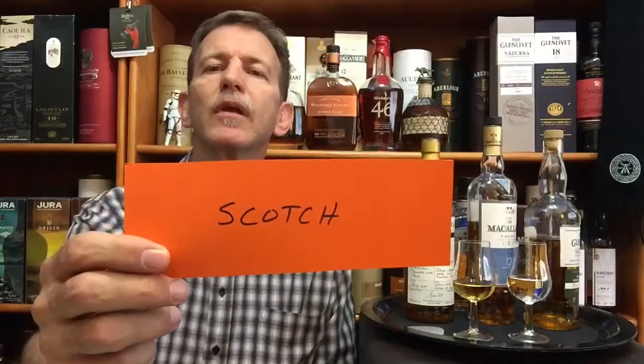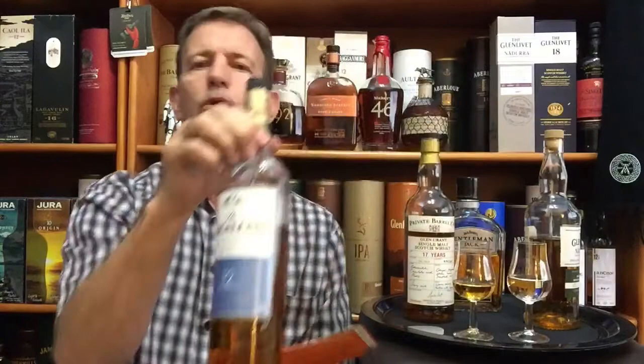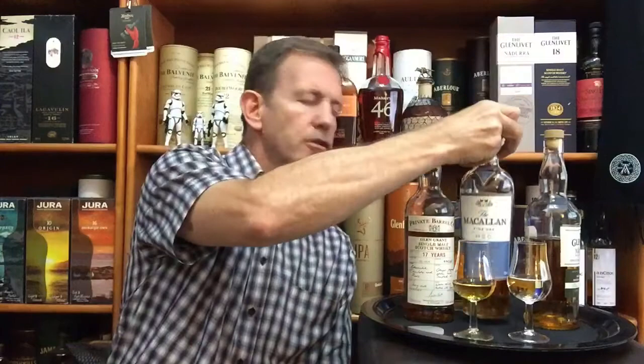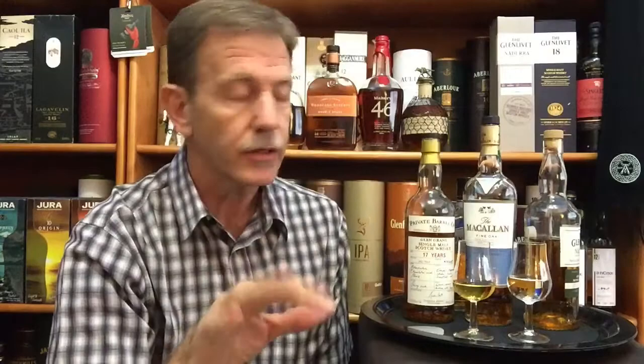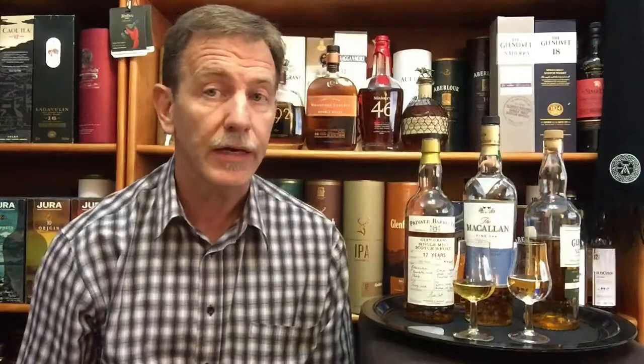What is a Scotch? A Scotch whiskey can be called a Scotch whiskey only if it is distilled and matured in Scotland. An Irish whiskey can only be called an Irish whiskey if it is distilled and matured in Ireland. A bourbon is distilled and matured in Kentucky, and a Tennessee whiskey is distilled and matured in Tennessee — otherwise you cannot call it a Tennessee whiskey.